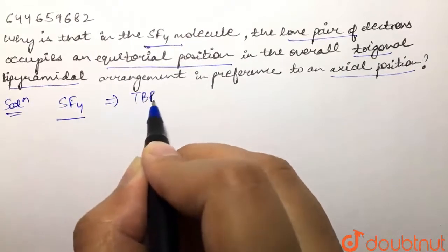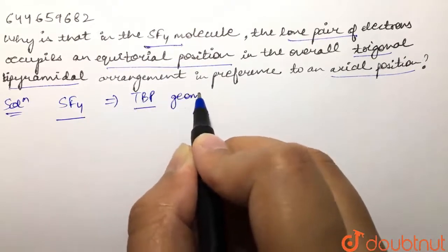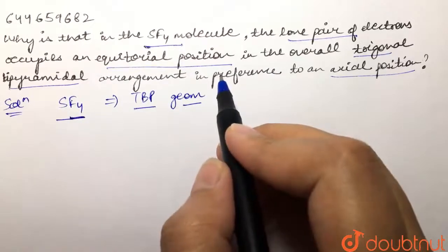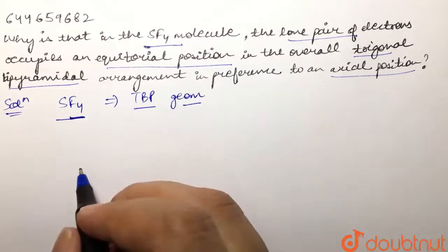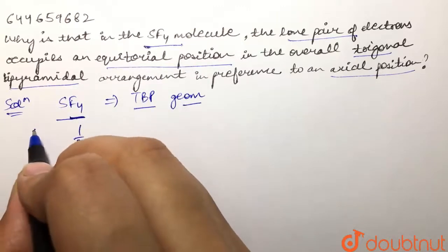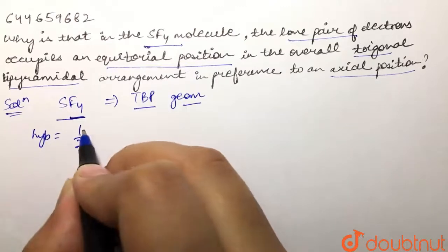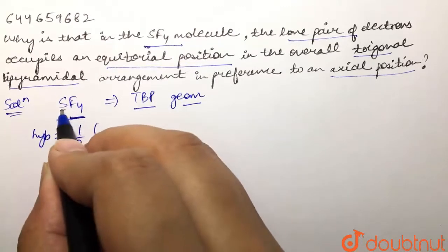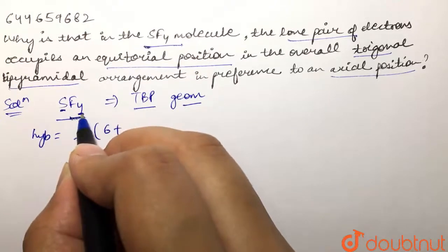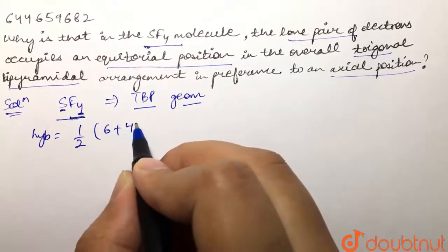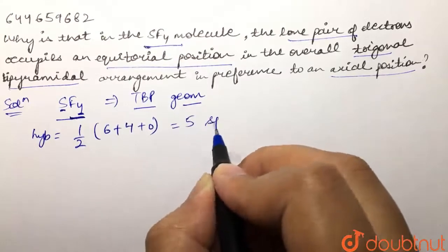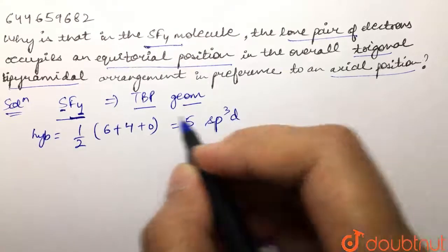In case of SF4, if we find out its hybridization or steric number, it would be half of number of valence electrons on central atom, that is sulfur which is 6, plus number of monovalent atoms attached to it, that is 4, plus zero for charge. This would be 10 by 2 which equals 5, meaning this is sp3d hybridized. Since we have four bond pairs, we have one lone pair.